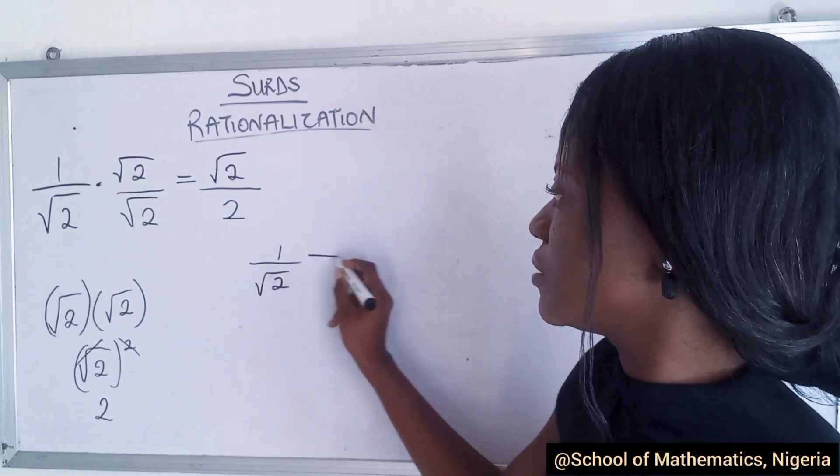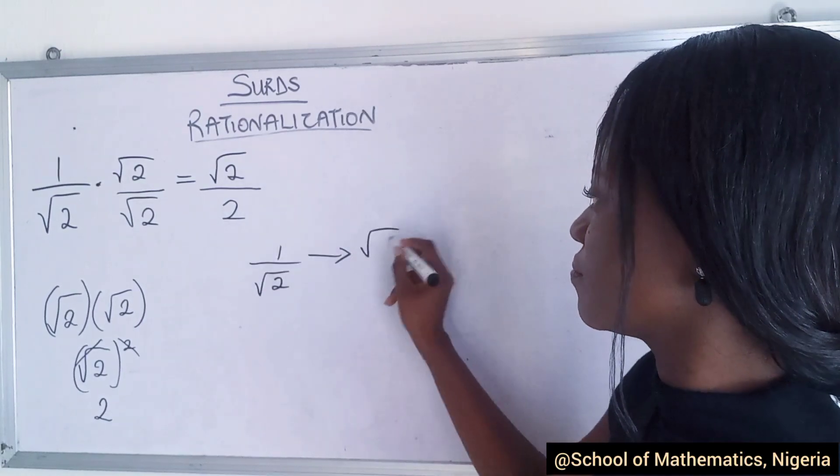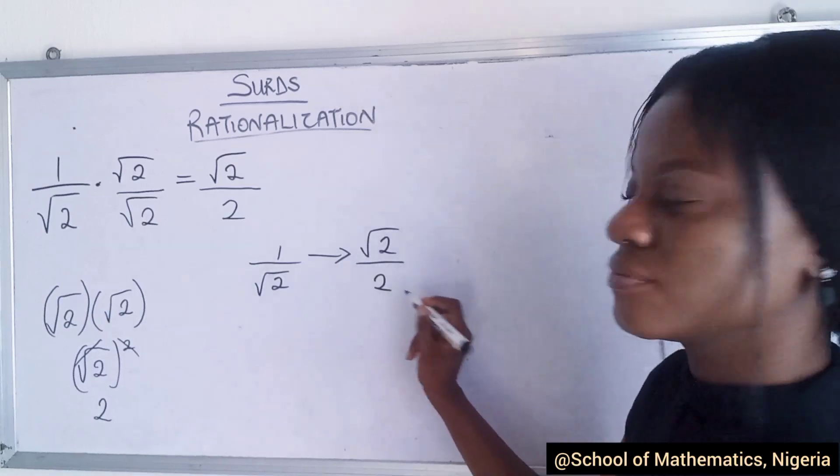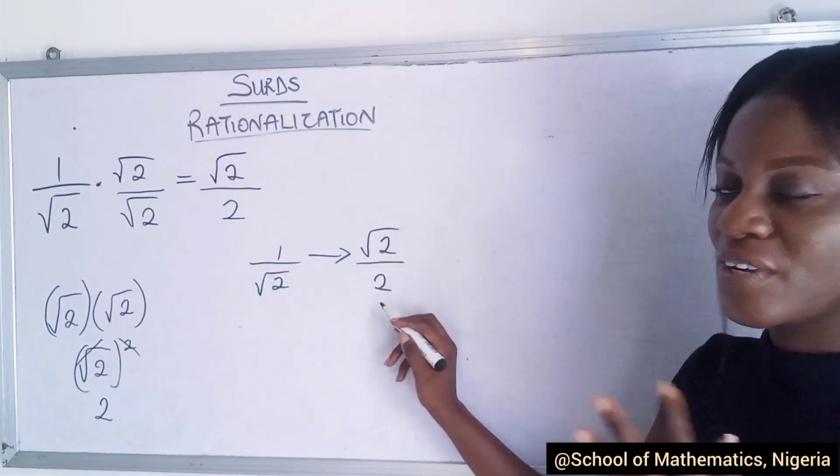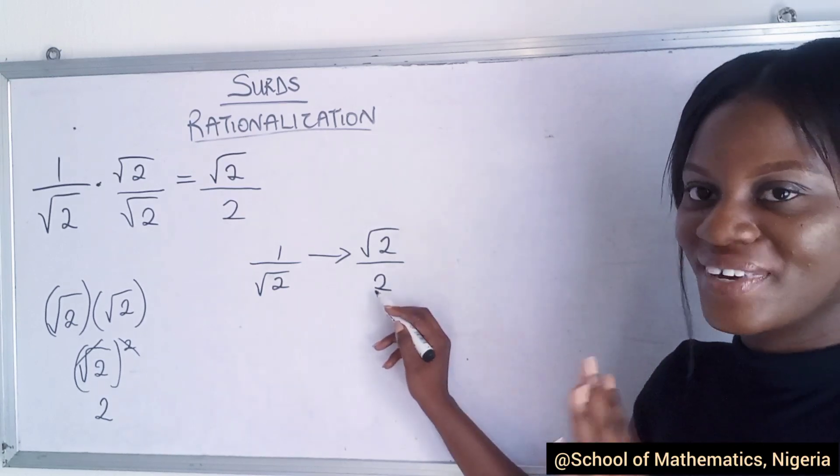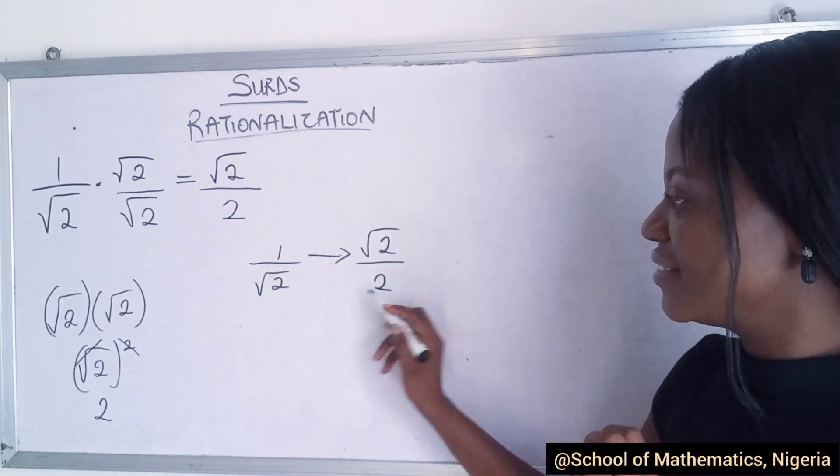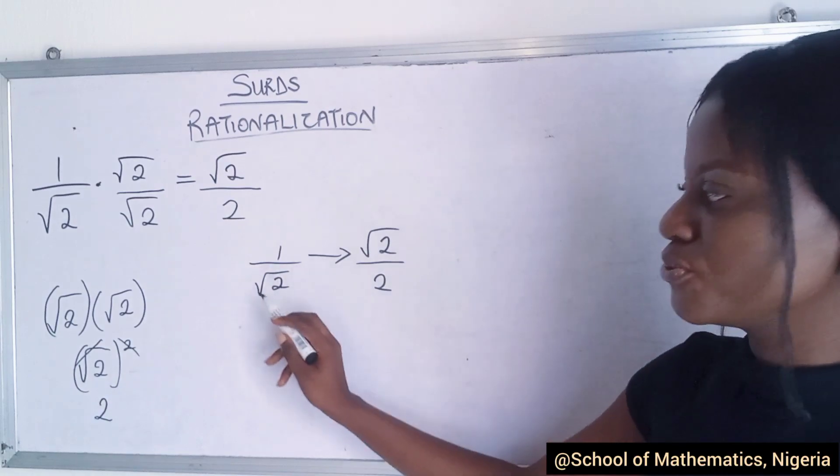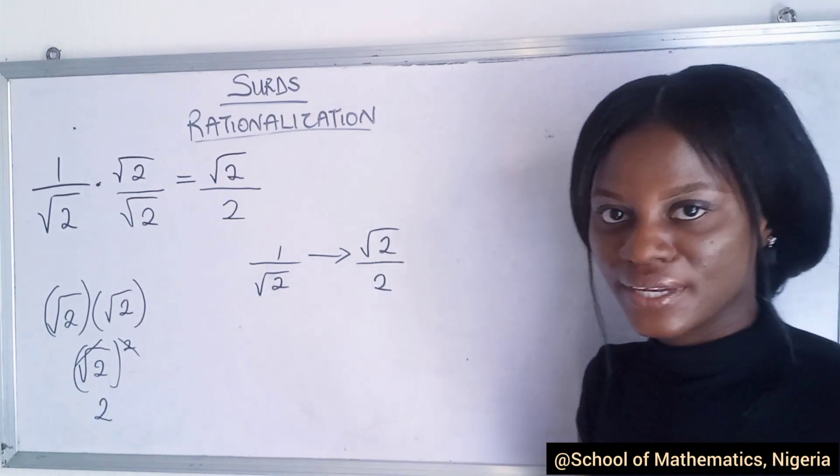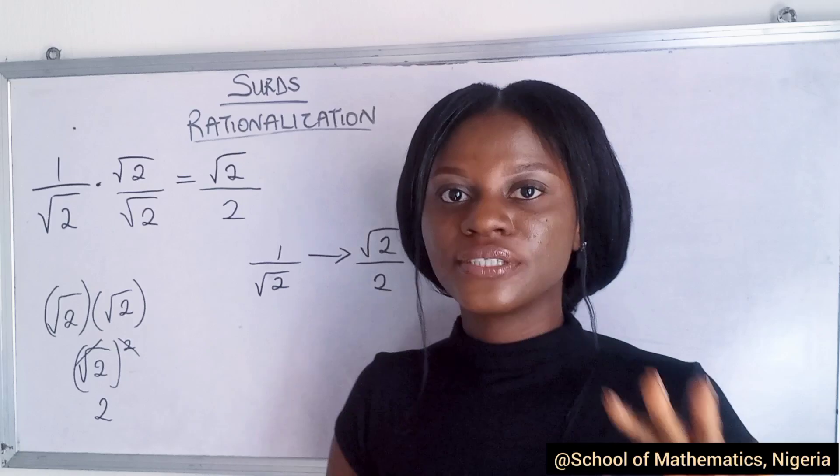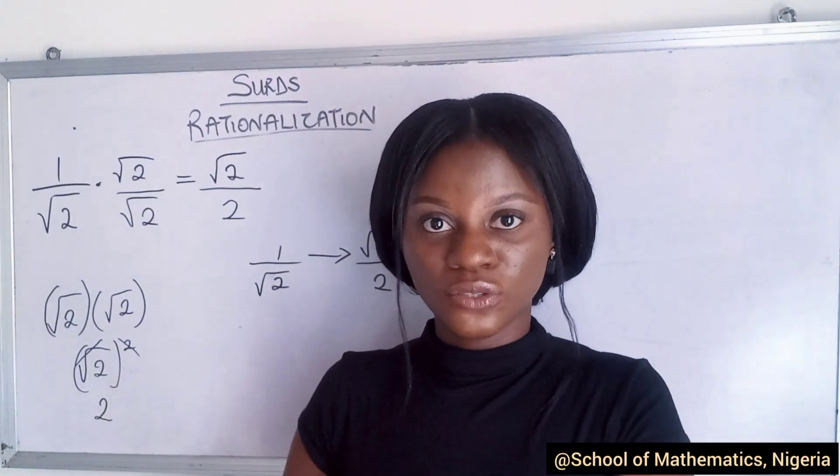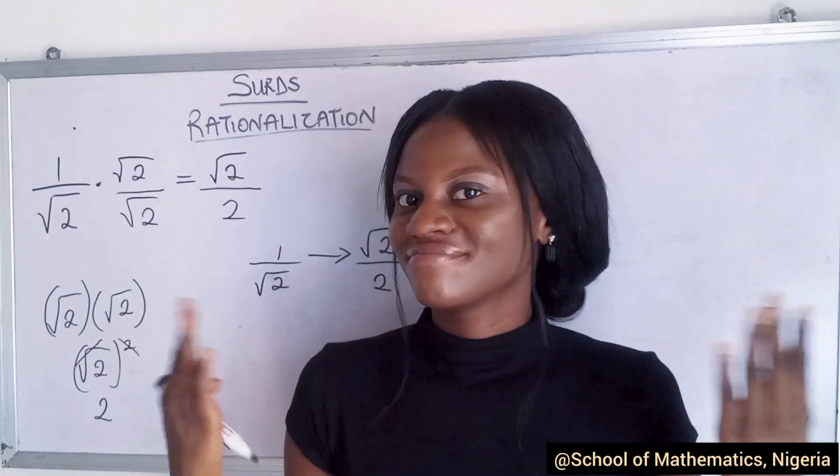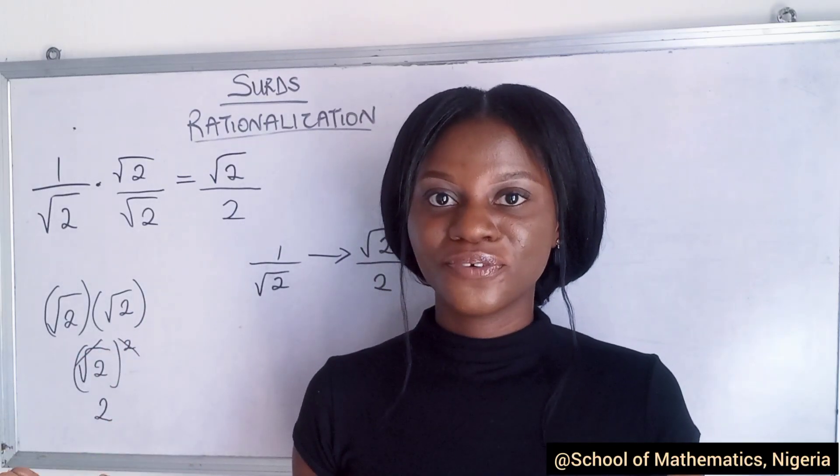Do you see what rationalization does? It changed this value that was given to us initially to this, √2/2. So now we have rationalized the value. As the denominator, we have a rational number, we don't have any irrational roots anymore. That's what rationalization is trying to do - it just needs you to cancel out the irrational denominator and make it rational.